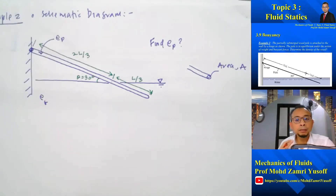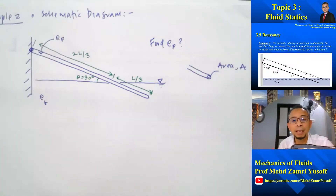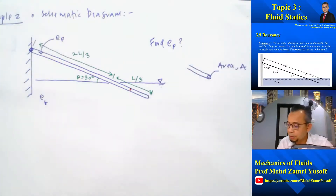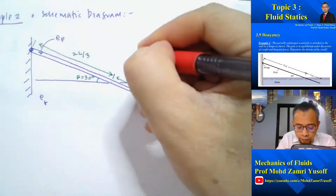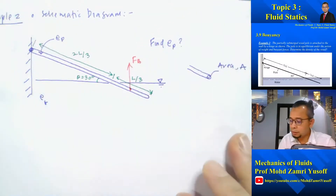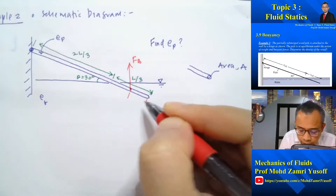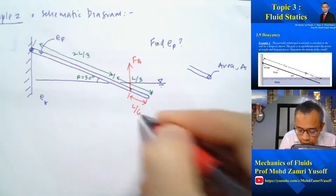Let's consider all the forces acting on the pole. First, we have the buoyancy force, which acts at the center of gravity of the displaced volume. Since the submerged length is L/3, the buoyancy force acts at the midpoint of that submerged section, which is at a distance of L/6 from the end.